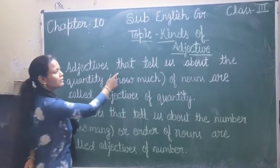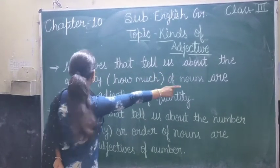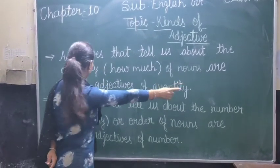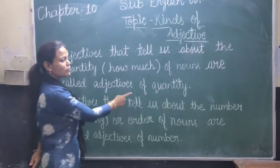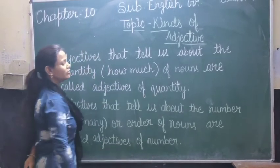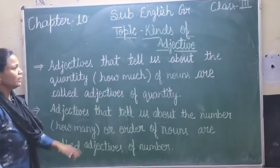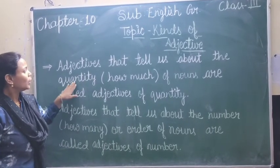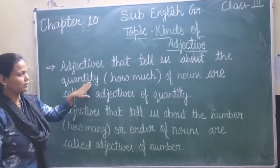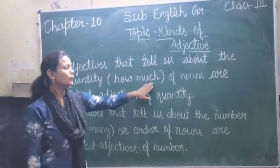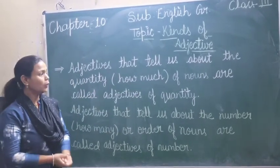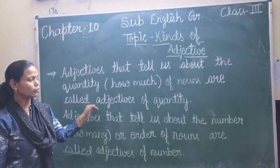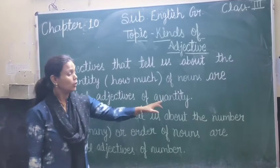What is adjective of quantity? Adjectives that tell us about the quantity — how much of nouns — are called adjectives of quantity. Adjective of quantity kya hota hai? Jo adjective hamein quantity ke baare mein batata hai. Quantity means how much. Jahan how much ka use karenge, wahan wo adjective of quantity hoga.